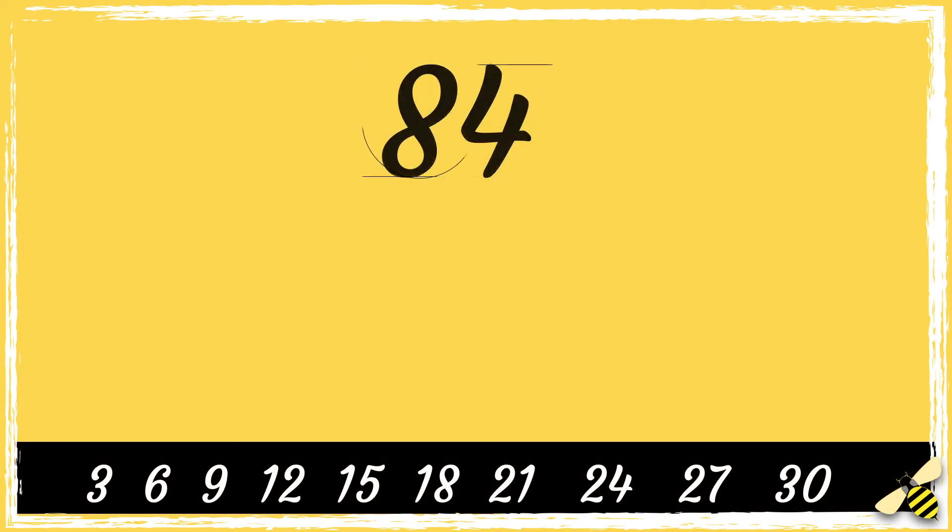Here is the number 84. If the sum of the digits in the number make a multiple of 3, then the number will be divisible by 3.